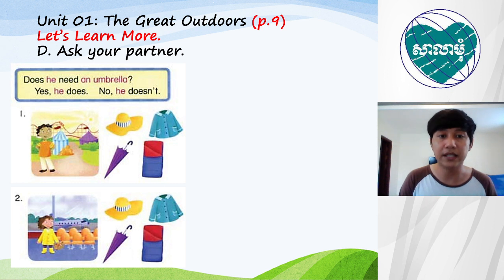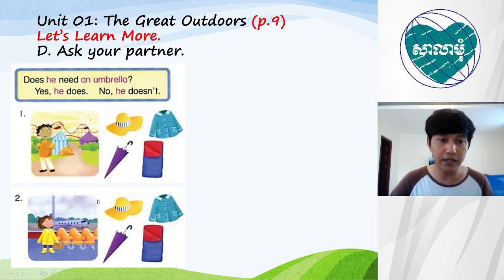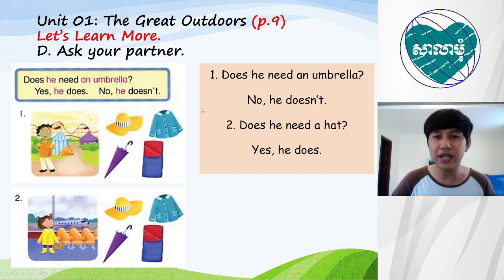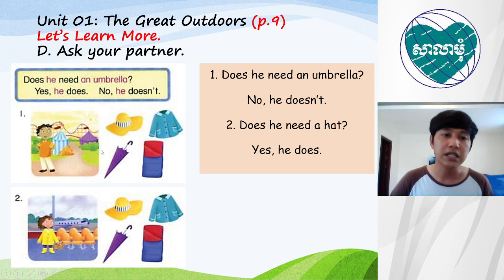Ask your partner. Look at this picture, everyone. Picture number one and picture number two — they stay at different places, but they are asking about the things they have around. The question: does he need an umbrella? Look at this situation. He needs an umbrella — yes, he does. You need to remember the umbrella. The same picture but a different question: does he need a hat? Yes, he does.